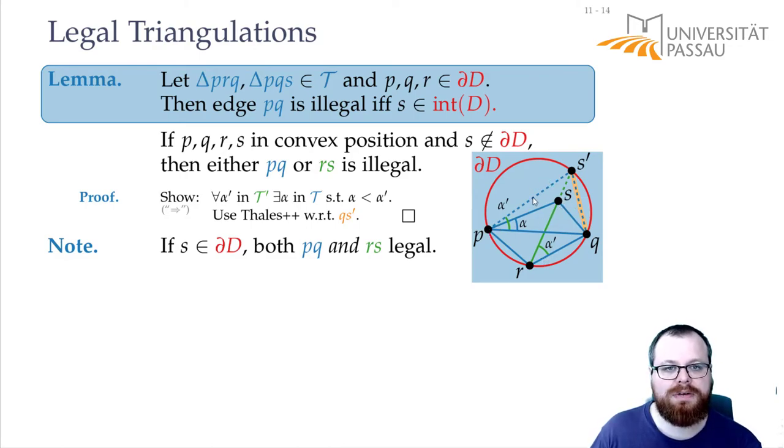If we take the green triangulation, then P is not in the interior of the disk, so SR is not illegal. That means both of them are legal. That's important, because it tells us that there are more than one legal triangulation.